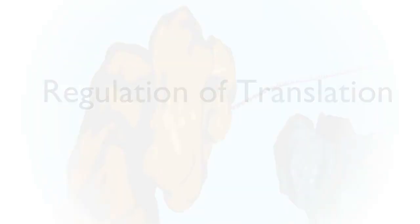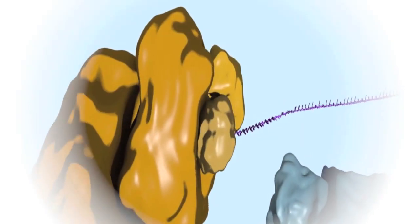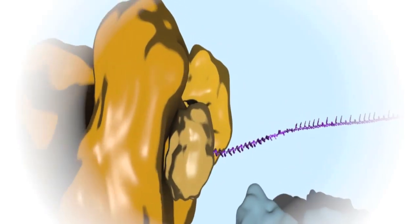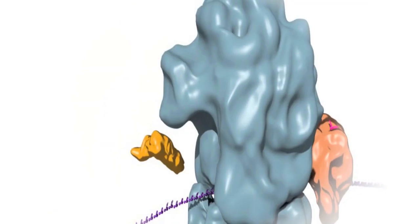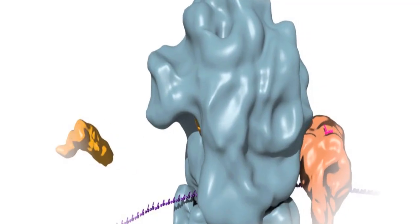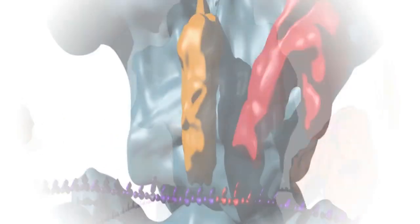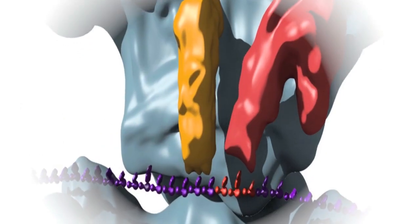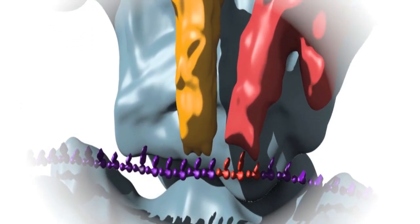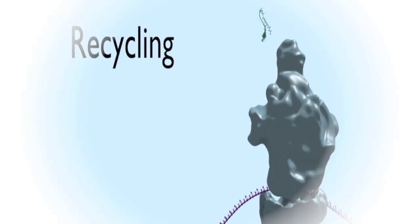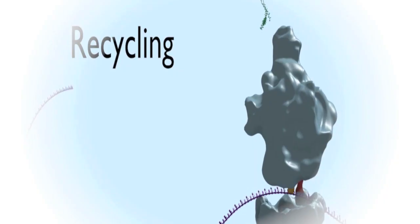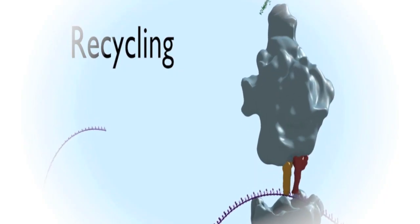The basic steps of translation, including initiation, elongation, termination and recycling, are the core steps that happen in order for an open reading frame in an mRNA transcript to be translated into its encoded polypeptide.